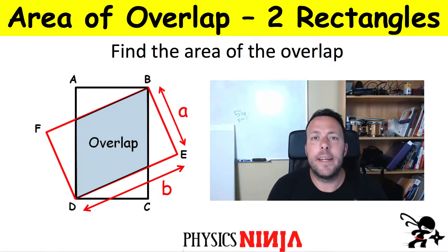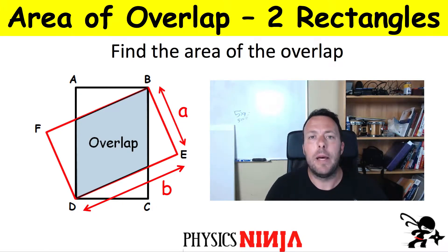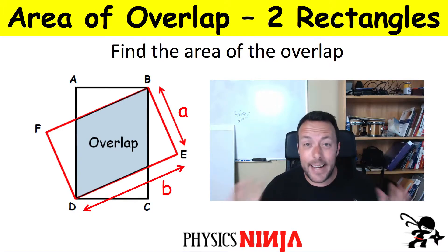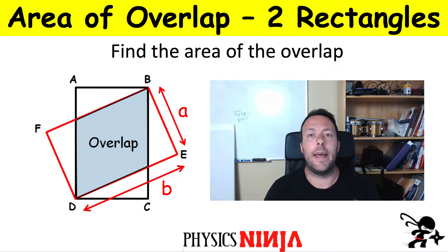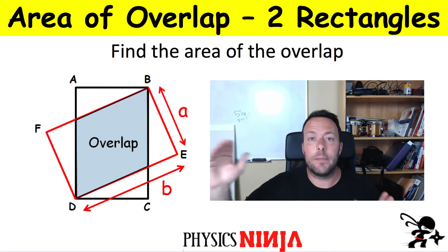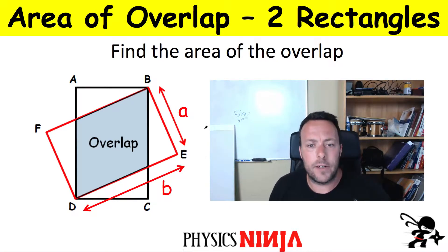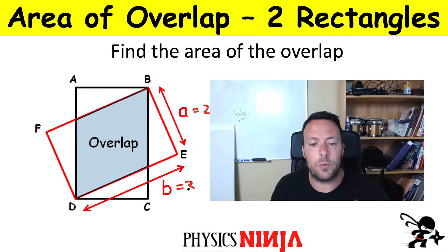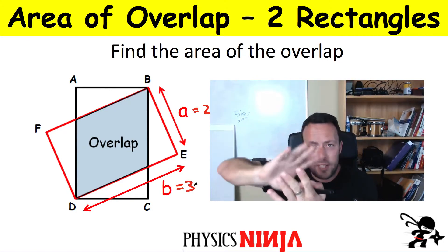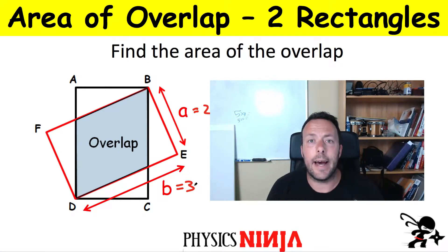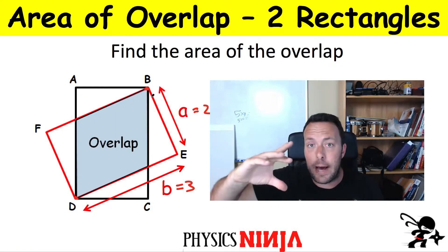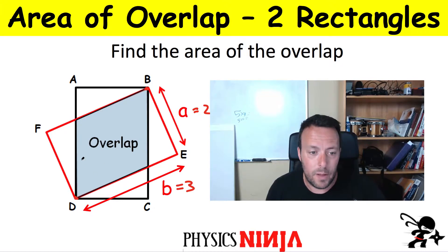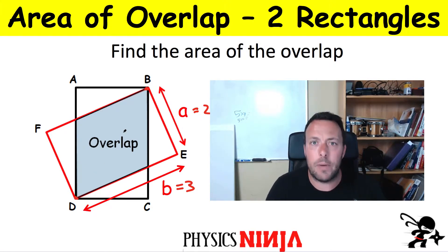Hi everybody, Physics Ninja here. Today we're going to do a nice geometry problem and look at the area of overlap between two rectangles. I have two identical rectangles - the short side I'll call 'a' and the long side I'll call 'b'. For example, a could equal 2 and b could equal 3. I'm going to rotate one relative to the other as shown, with their vertices connected, and calculate the area of that overlap - the shaded region.